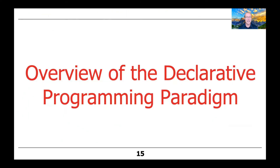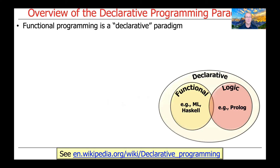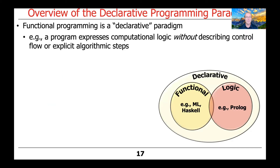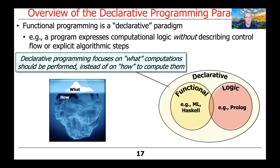Let's take a look at declarative programming as an alternative model. Functional programming is a so-called declarative paradigm, which means a program expresses its computational logic without having to describe the control flow or the explicit algorithmic steps. Another way to look at this is that declarative programming focuses on what computations to perform rather than how they should be computed, which is left as an implementation detail for lower-level libraries or compilers to ferret out.